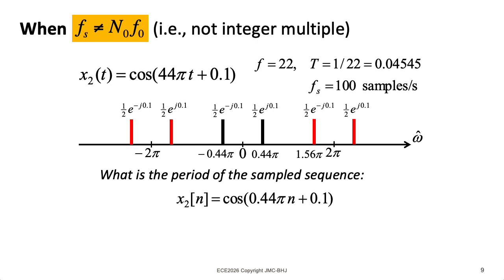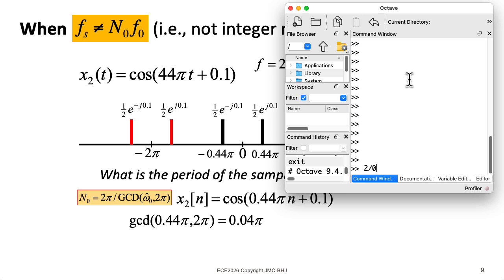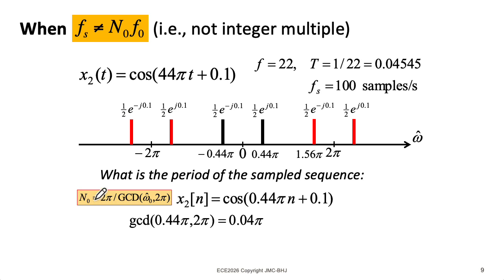If we want to find out the period of this discrete time sequence, we can use this formula. The GCD of 0.44π and 2π is 0.04π. And let's check that. 2 divided by 0.04 is 50, and 0.44 divided by 0.04 is 11. So that checks out. To get the period, we take 2π and divide it by that greatest common divisor, which gives us a period of 50 samples. So there you go.